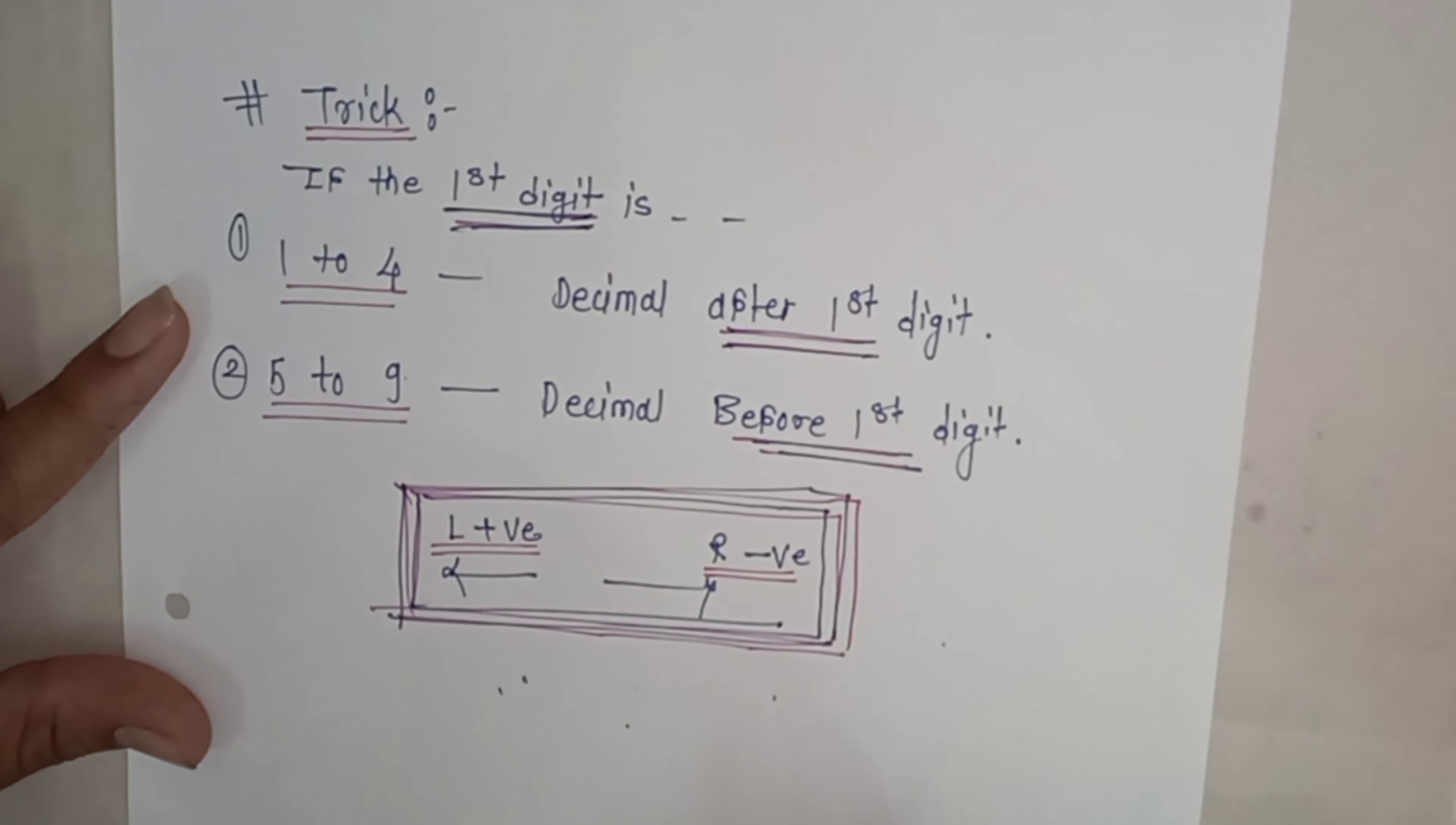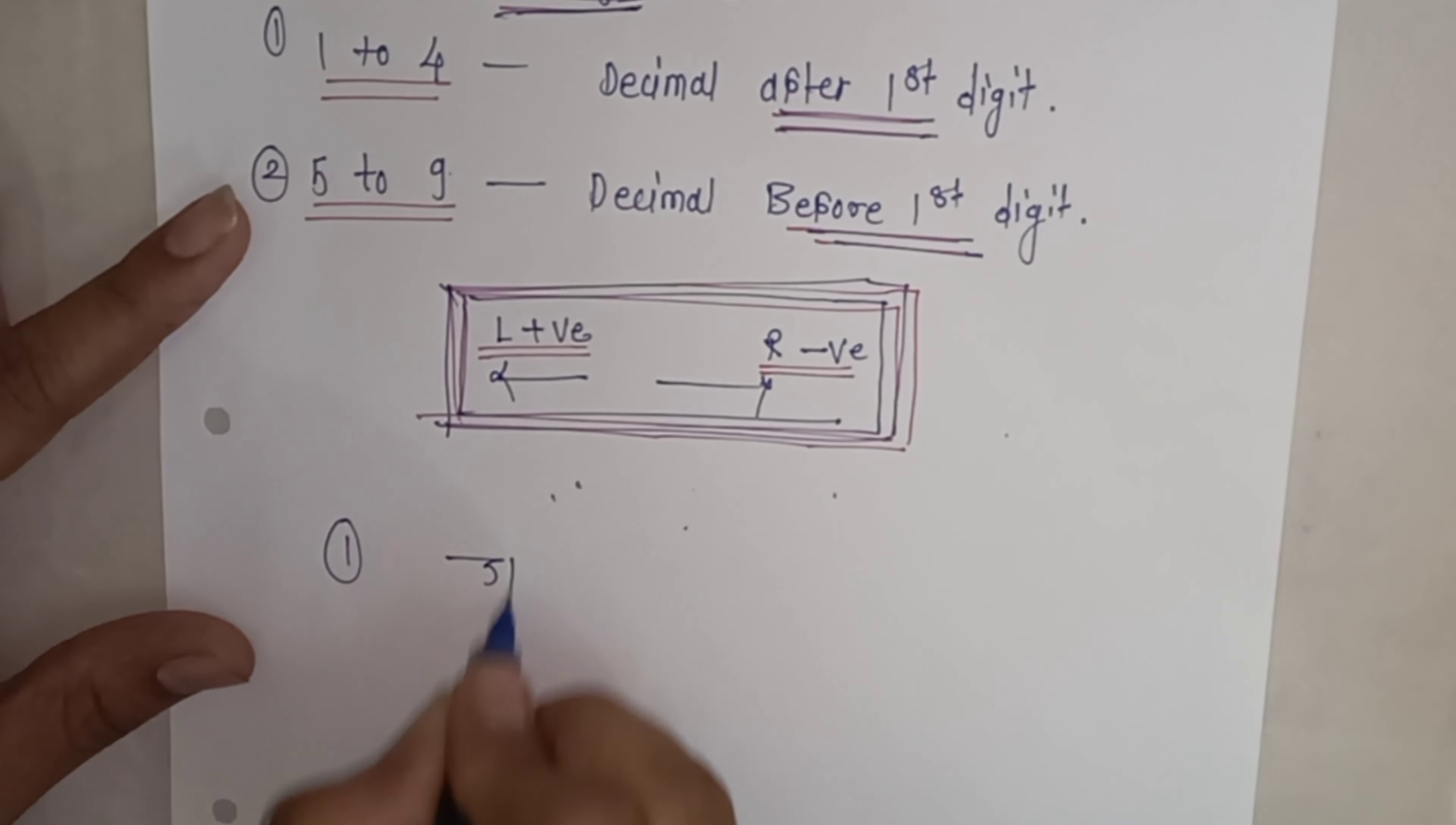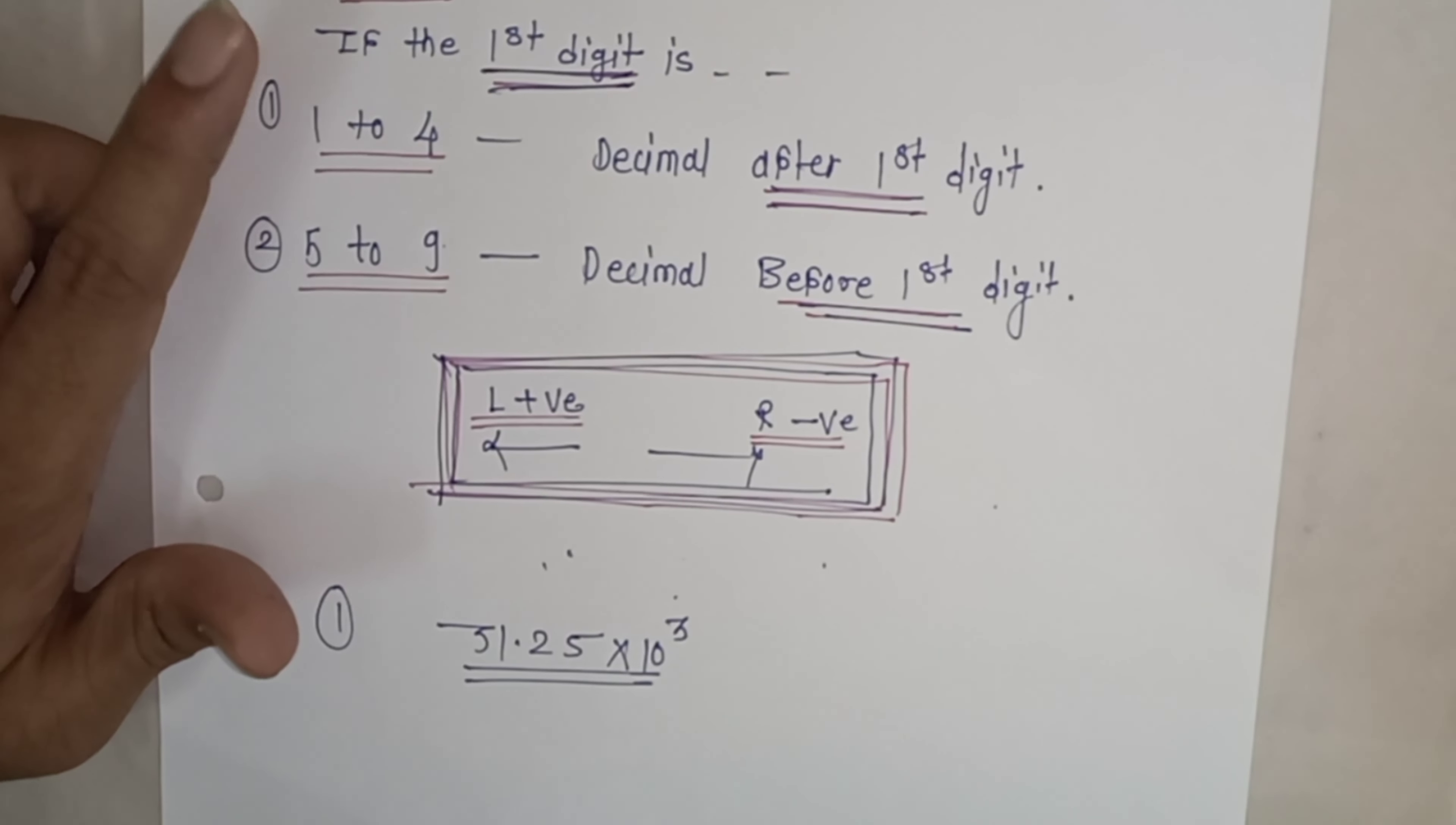And the third concept - when you apply this first rule, make sure to review the first video where decimal placement was explained in detail. Let's take a simple example. First example: we have the number 31.25 × 10³. The question asks: write the order of magnitude for this number.